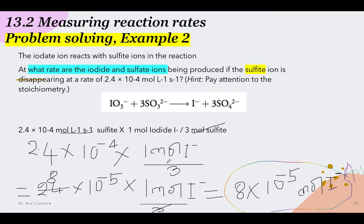Applying the mole ratio: the sulfite to iodide ratio is 3 to 1. With the sulfite disappearing at 2.4 × 10⁻⁴ mol/L/s, after canceling units we find the rate of iodide formation. Then for sulfate, since the ratio is 3 to 3 (1 to 1), the sulfate is also produced at 2.4 × 10⁻⁴ mol/L/s.